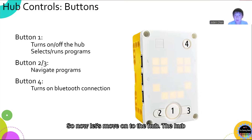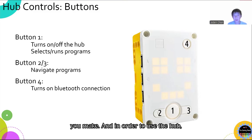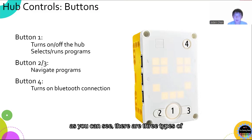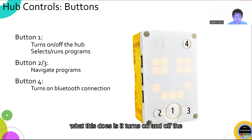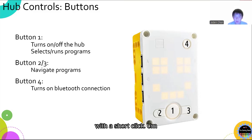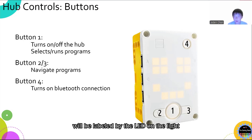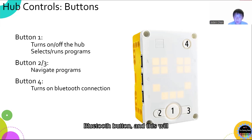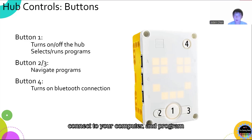So now let's move on to the hub. The hub is what powers the robot's motors and sensors, which have to be connected to it, and it also stores the programs that you make. In order to use the hub, you have to first understand the four buttons and how to use them. There are three types of buttons: a rounded button at the bottom center that turns the hub on and off if held for three seconds and selects and runs programs with a short click; buttons to the left and right used to navigate programs labeled by a number on the LED light matrix; and a Bluetooth button that turns on Bluetooth so you can connect to your computer and program the robot wirelessly.